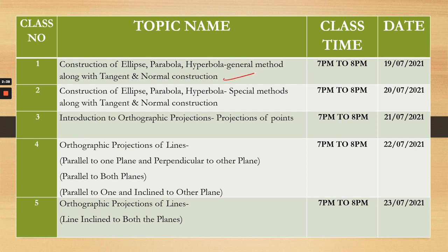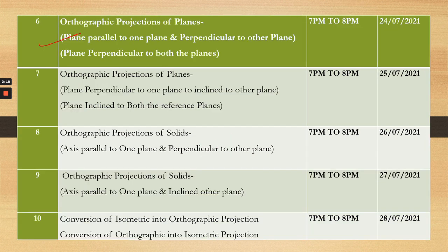The Engineering Drawing syllabus covers conic sections, projection of points, projection of lines, projections of planes, conditions of planes, projections of solids, and projection conversions — covering all the full conditions and topics required.